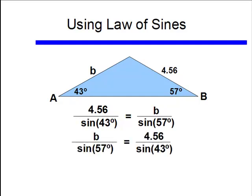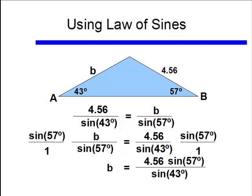I usually start off by making sure my unknown is on the left-hand side. From here, all I need to do is multiply both sides by sine of 57 degrees. We can see that sine of 57 degrees divided by sine of 57 degrees is just 1, leaving us B on the left-hand side, and then a whole bunch of things on the right-hand side.